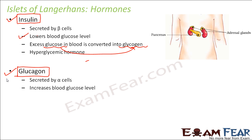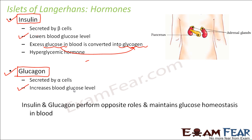You will be surprised to know that the functions of insulin and glucagon are exactly opposite to each other. Glucagon is secreted by alpha cells and its job is to increase the blood glucose level. Together, these two hormones maintain the right glucose level in the blood. If the glucose level increases too much it causes diabetes; if it reduces too much, that is also a problem. So insulin and glucagon perform opposite roles and maintain glucose homeostasis in the blood — keeping the stable state of glucose level.